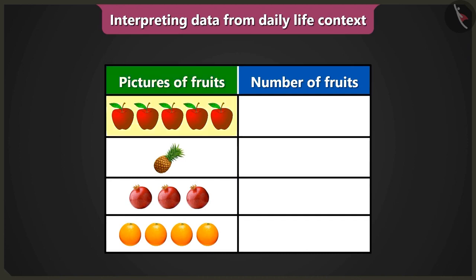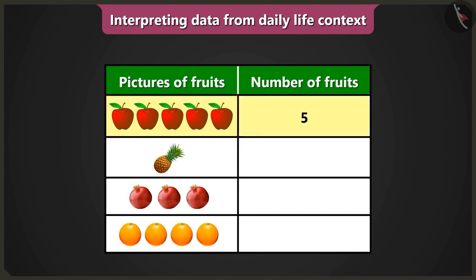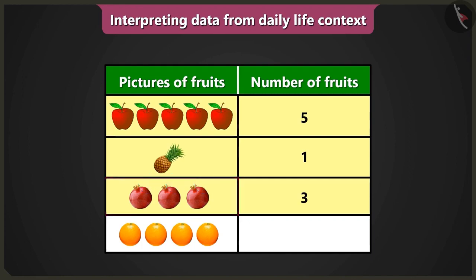How many pictures of apples are given in this table? There are five pictures of apples. So we have to write the number of apples — five — in the column of number of fruits. Similarly, there is one picture of pineapple, so we write one. There are three pictures of pomegranate, so we write three. There are four pictures of oranges, so we write four.